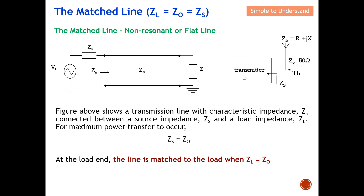Typically, this is how we connect a communication device. For example, we have a transmitter and an antenna linked through a coaxial cable. The source impedance is basically how much impedance we see when we look into the transmitter. A coaxial cable typically has a characteristic impedance of 50 ohms. So ZS needs to be 50 ohms and ZL also needs to be 50 ohms in order to have a match condition.